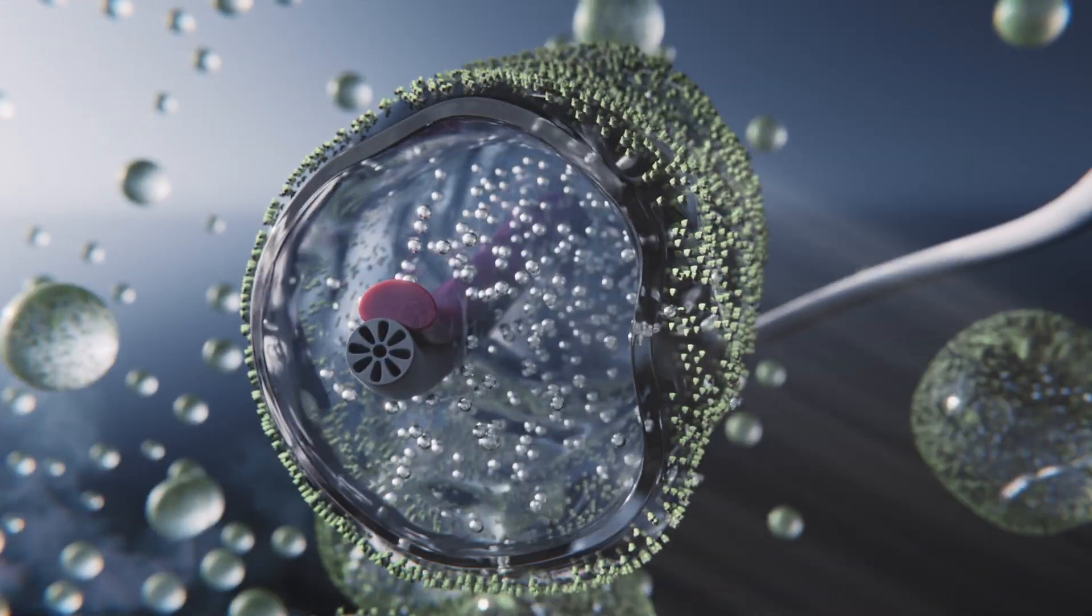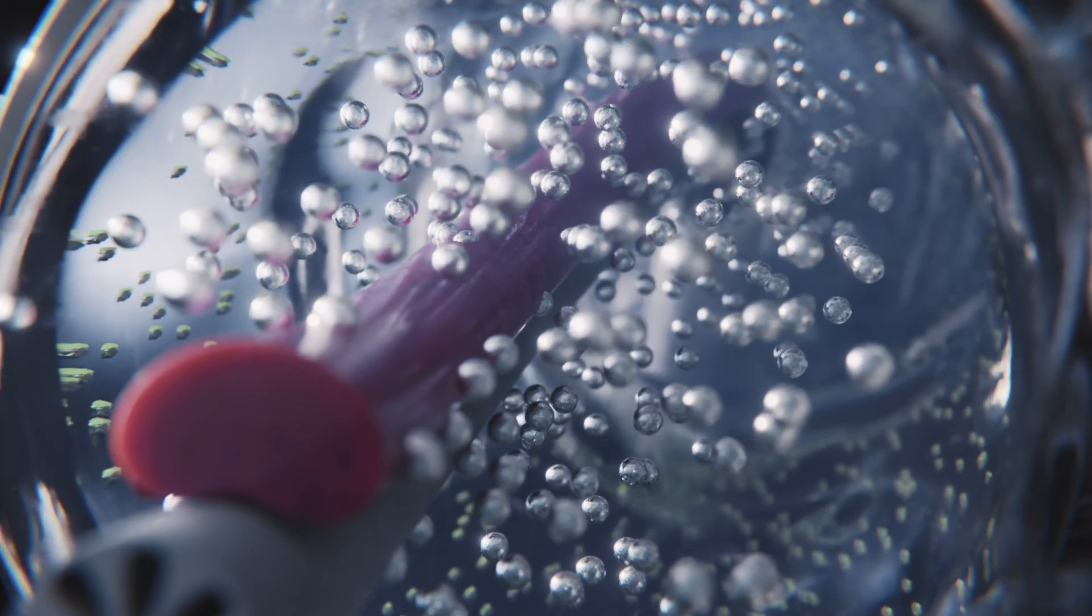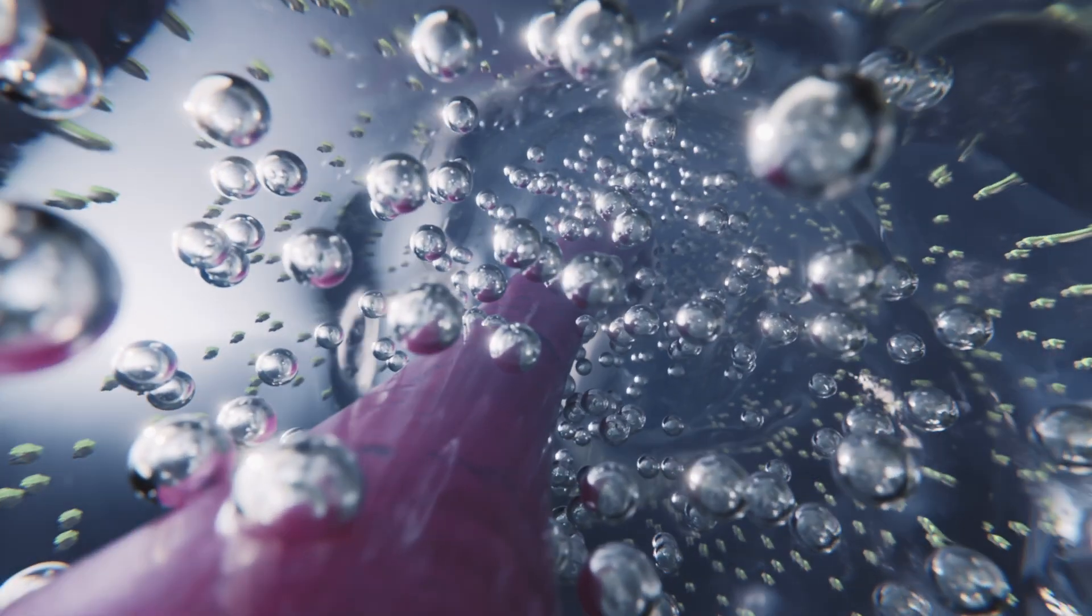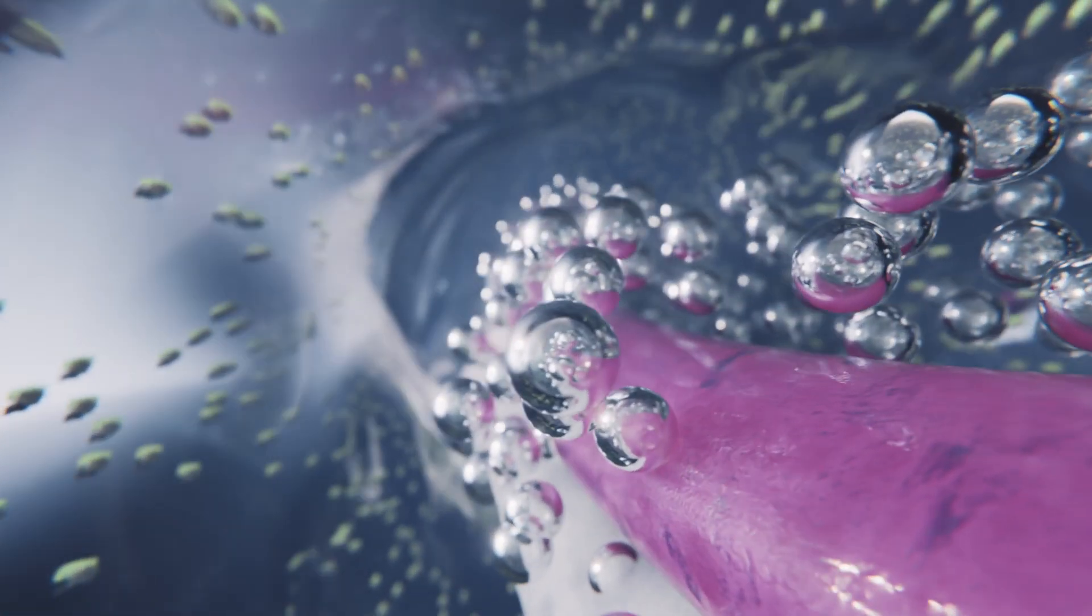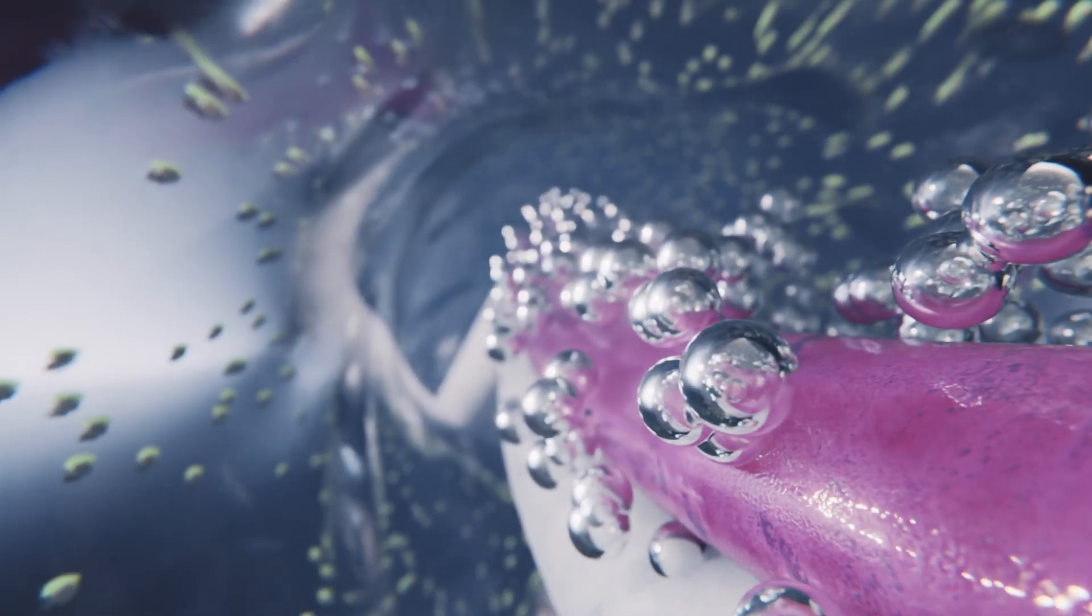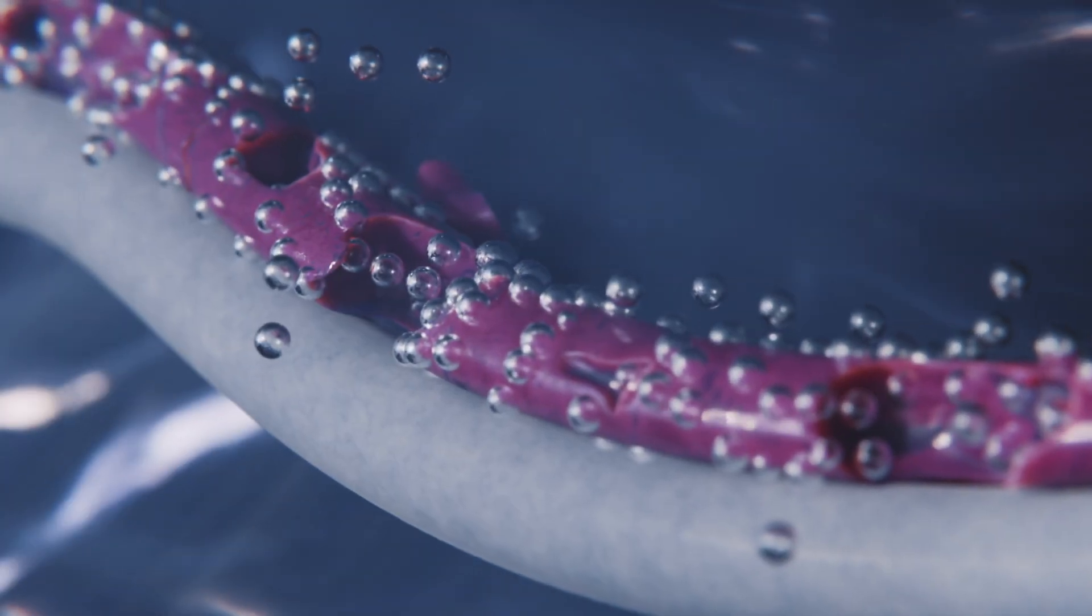This is not an indiscriminate aggregation. It's a selective and purposeful assembly, hinting at a highly specialized mechanism at work. The mitochondrial derivative, once encased within this newly formed vesicular sheath, breaks apart into smaller chunks.